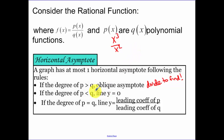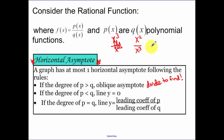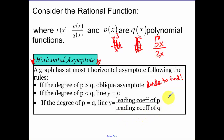If the degree on the top is less than the bottom — like x² over x³ — think about which number gets bigger faster. You'll have bigger numbers on the bottom, so your horizontal asymptote as x gets really large is going to be y equals zero, because one over a really big number is really close to zero. Now if your degrees were equal, like 5x over 2x, it would be y equals five-halves — that's the ratio of the leading coefficients of p and q.